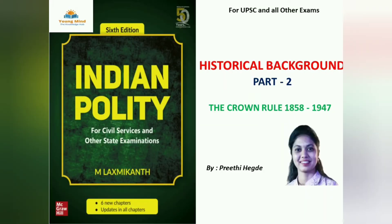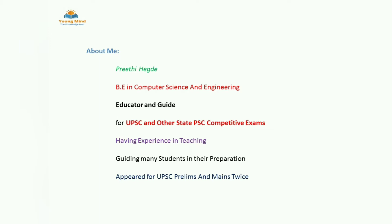Hey everyone, welcome to Young Mind, the knowledge hub. In the last video we discussed the first chapter of Laxmikant, that is historical background — Company Rule from the period 1773 to 1858. This is an important chapter where you will get a lot of direct questions. We discussed how and when the British came to India, the Diwani rights, Regulating Act, Pitt's India Act, and the series of Charter Acts.